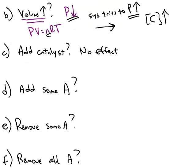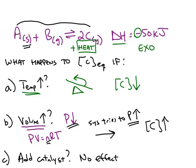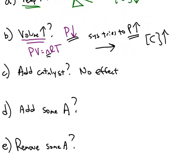The last three stresses are all about adding or removing chemical A. And chemical A is a solid. Solids do not appear in K. If we stress this by adding some A, remember the concentration of a solid is independent of the amount. Adding a little bit of A or a lot of A is not going to have any impact.